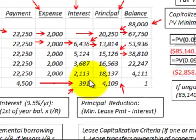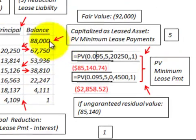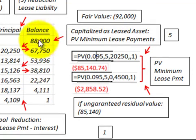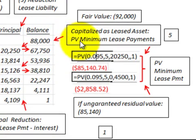The next step is to determine the capitalized amount of the leased asset, which is $88,000. This is what we start with on the lease amortization schedule, representing the present value of the minimum lease payments.